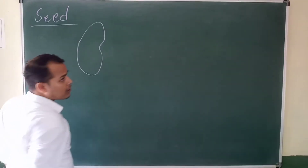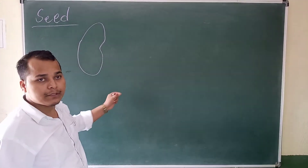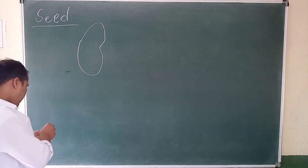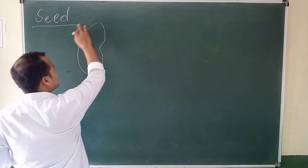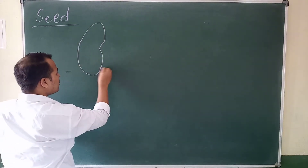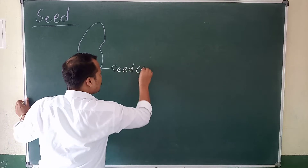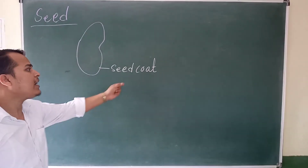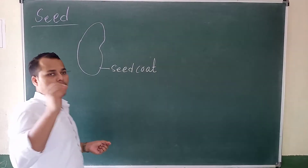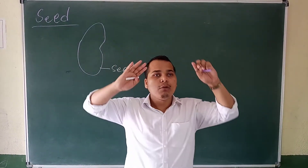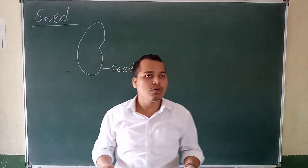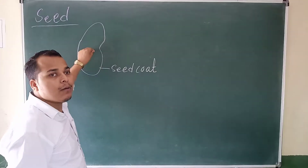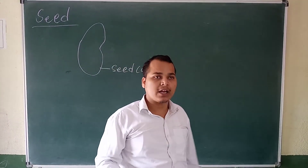Different plants have different types of seeds. The outer covering of the seed is called the seed coat. The function of the seed coat is that it is hard. Why? Because it protects the seed from external attack.